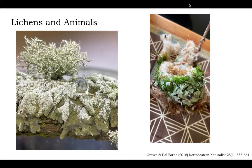Another quite different role for lichens in interactions with animals is their use as nesting material. This is a hummingbird nest, but the use of lichens for nesting material is not exclusive to hummingbirds. There could be a variety of reasons for this use, including of course camouflaging the nest, but also many lichens contain quite a diversity of secondary metabolites, many of which have antimicrobial properties — and it could actually be protecting the eggs and nestlings from potential pathogens.